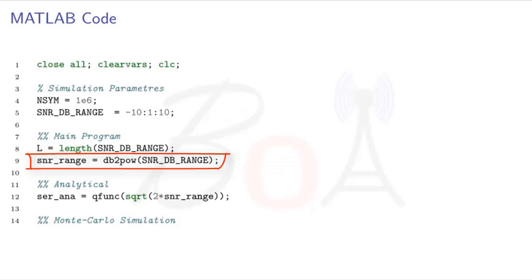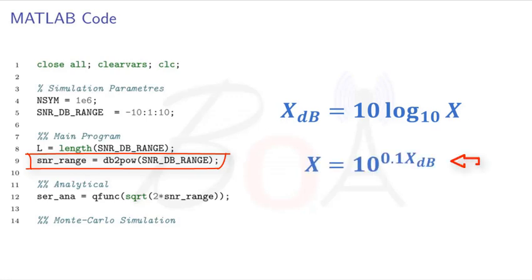You can recall that the relation between power and decibel is given as x_dB equals 10 log base 10 x, where x is the power measurement and x_dB is its value in decibel. The corresponding reverse relationship is given as this one.